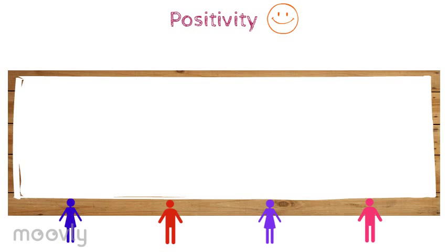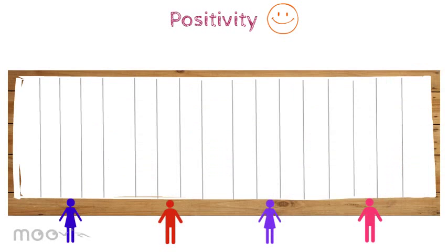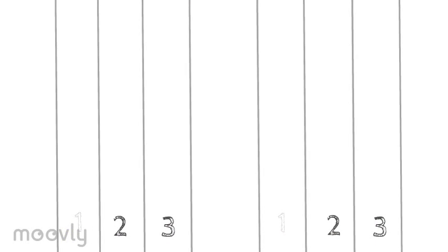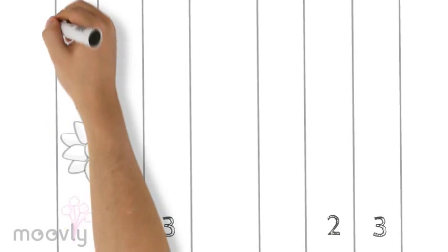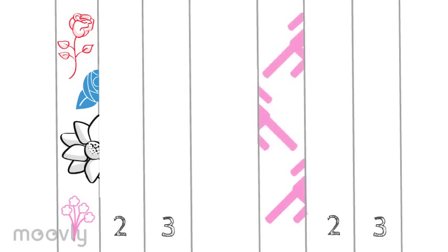For each participant, three evenly spaced white lines will be drawn vertically on the paper. This makes three empty strips for each person. Everyone sitting in front of the paper now draws something which he associates with positivity in the first empty strip. This can be something figurative or something abstract.